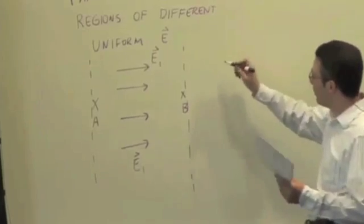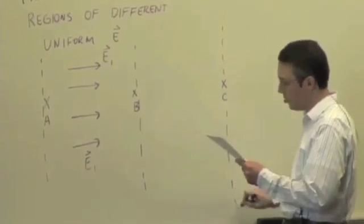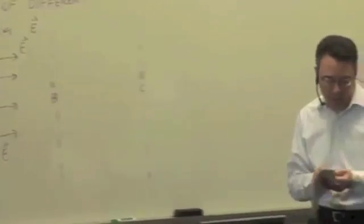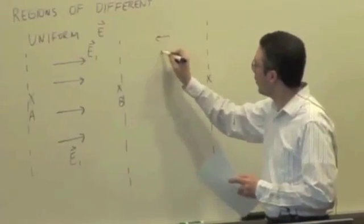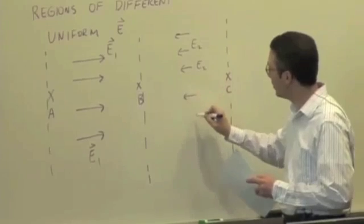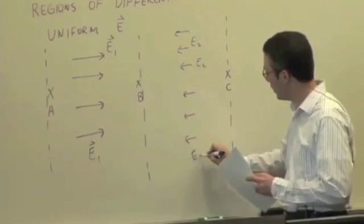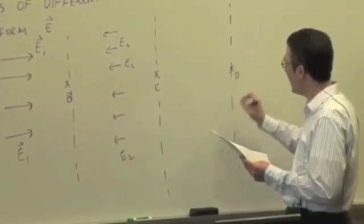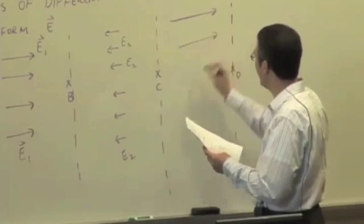And then from B to C, which is here, let's say I have a different electric field. It's uniform within that region. We'll call this E2. So I measured just a different electric field in this part of the space. And we can even have a third region from C to D. We'll call this E3. Maybe it's even off in some direction.